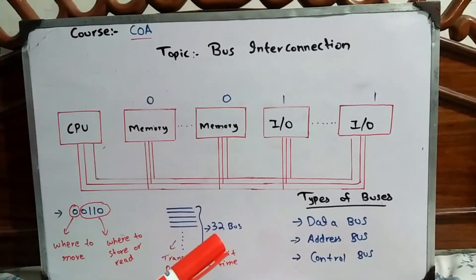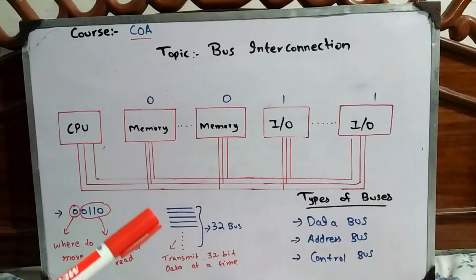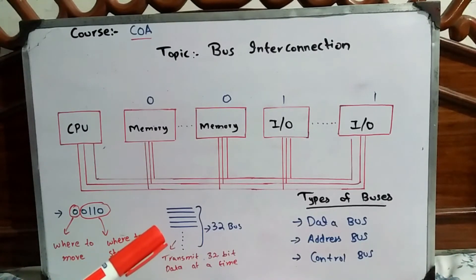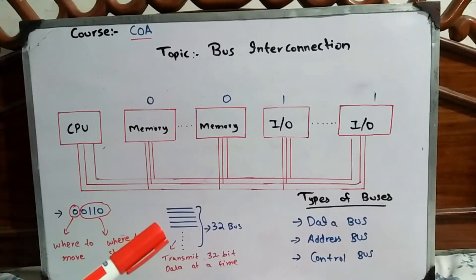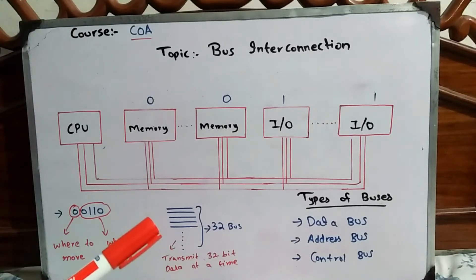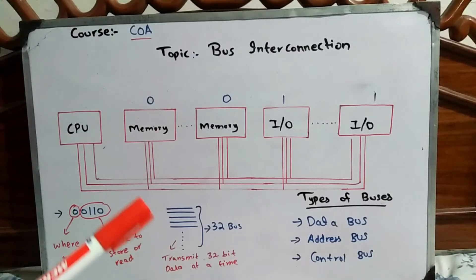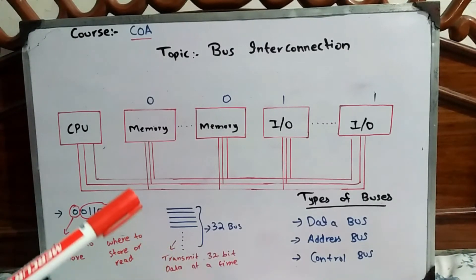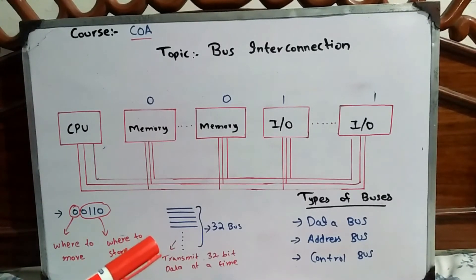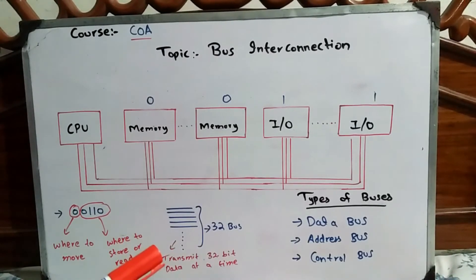If 32 buses are connected in a system, you can transmit 32-bit data at a time. If 64 buses are connected, you can transmit 64-bit data at a time. If you have 32 buses but want to transmit 64-bit data, you can transmit the first 32 bits, then transmit the remaining 32 bits one by one.